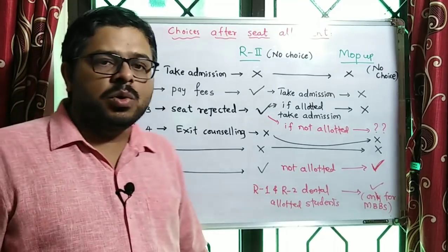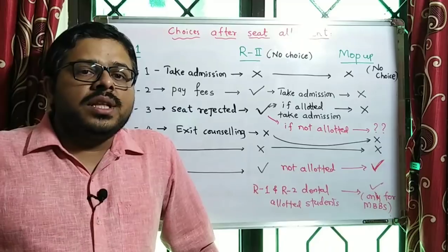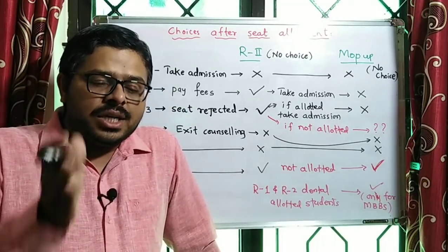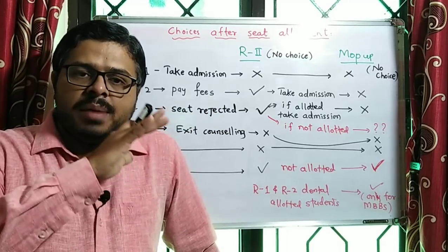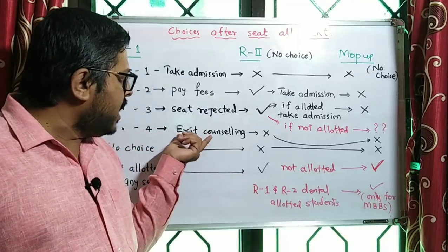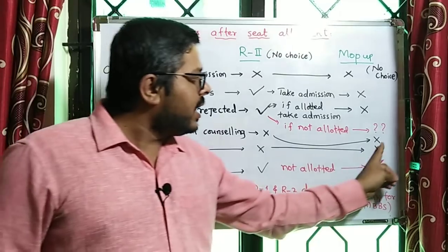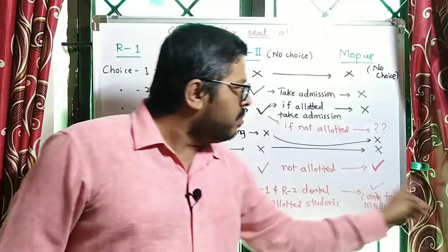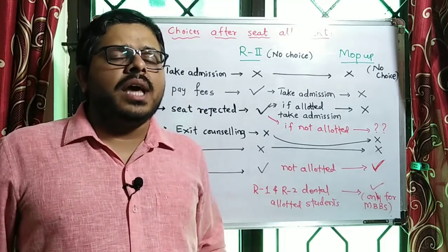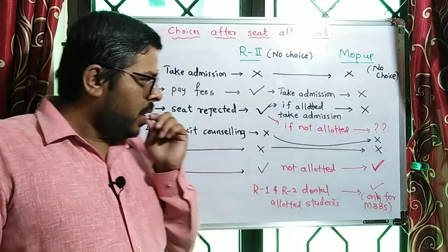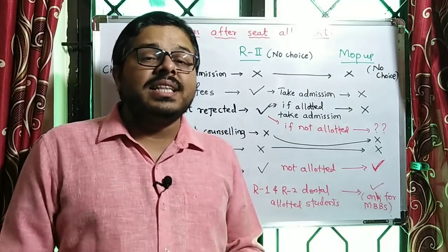Choice four: you are exiting from the counselling. Choice four means you are allotted a seat, but you don't want that seat and you have changed your mind — you don't want to take admission in MBBS or BDS. If you select choice four, you will not be eligible in the second round, and you are also not eligible in the mop-up round. That is very very important.